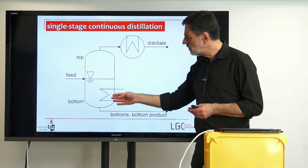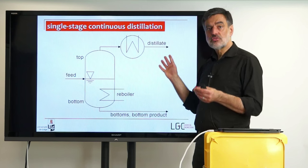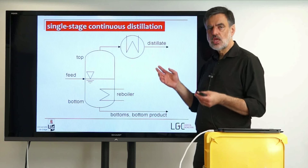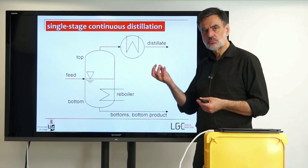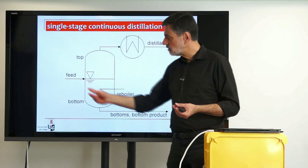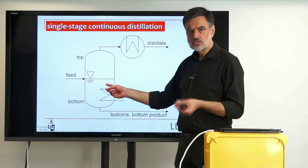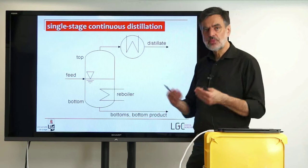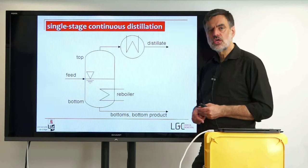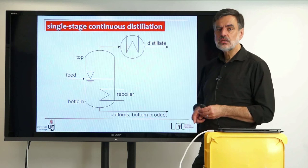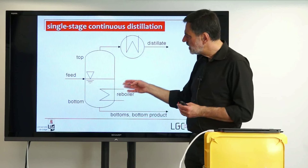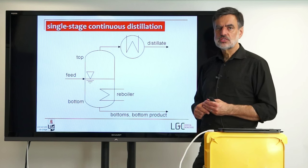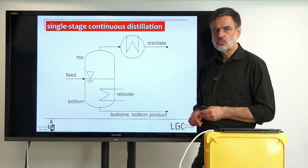For the continuous process, if we want to set up balances, we make a typical assumption for all continuously operated equipment: we assume that we have a steady state. Steady state means that at any point of the process, everything is constant — the properties are constant: densities, concentrations, viscosities, but also the flow rates at that regarded point are constant. In that steady state, you don't have to account for the accumulation term in your control volume. So if you set up the balance for the entire equipment or for fractions of the equipment, we assume there is no accumulation of the regarded property within the control volume.